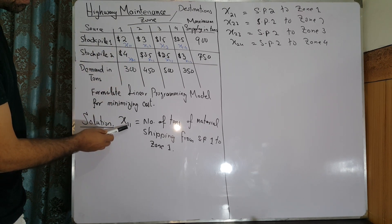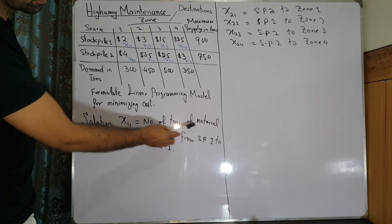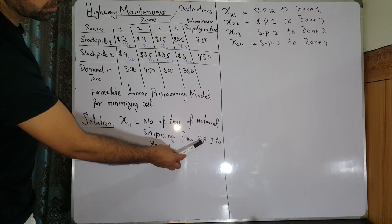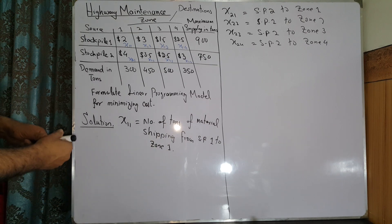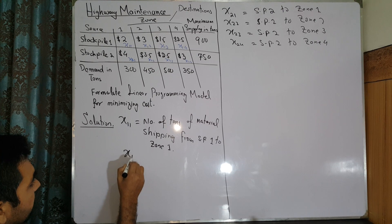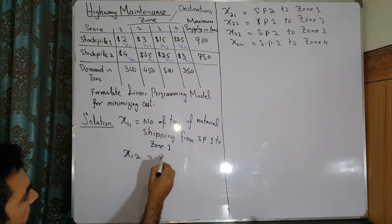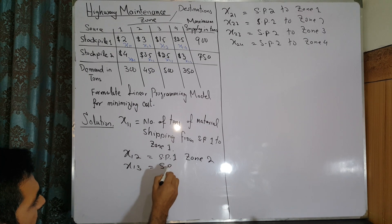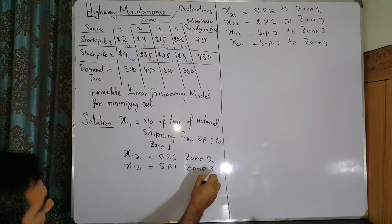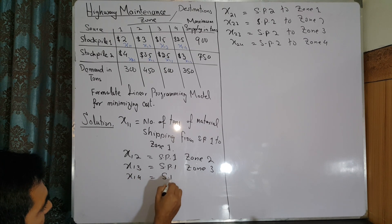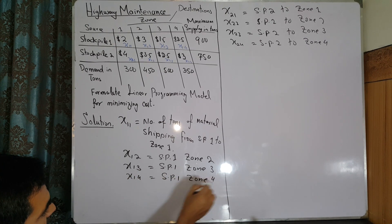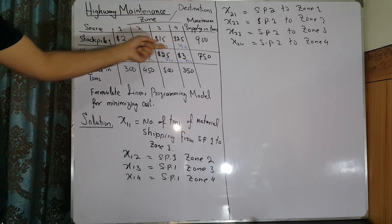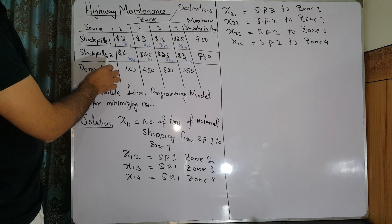So x11 is the number of tons of material — whether salt or sand — shipping from stockpile 1 to zone 1. Similarly, x12 is from stockpile 1 to zone 2, x13 from stockpile 1 to zone 3, and x14 from stockpile 1 to zone 4. For stockpile 2, we define x21, x22, x23, and x24 for zones 1 through 4 respectively.